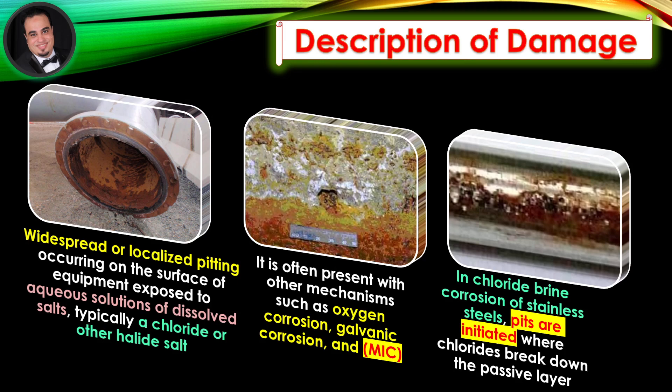It is often present with other mechanisms such as oxygen corrosion, galvanic corrosion, and microbiologically influenced corrosion. In chloride brine corrosion of stainless steels, pits are initiated where chlorides break down the passive layer.